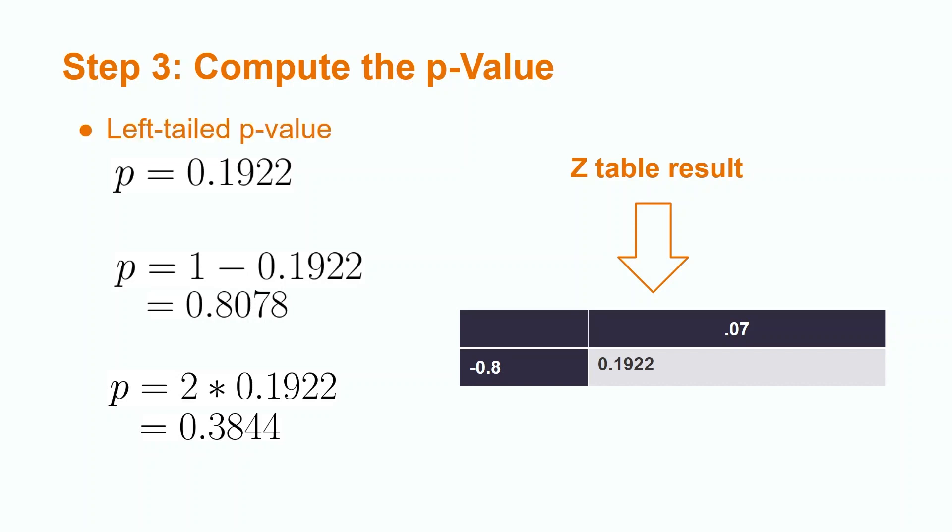If the test is right-tailed, we subtract the value we find on the table from one. This gives us a result of 0.8078. If our test is two-tailed and our test statistic is negative, we simply use the method for finding the p-value for a left-tailed test and double it. If it is not negative, we use the method for finding the p-value for a right-tailed test and then double it. This will result in a p-value of 0.3844. Please note that your p-value should always be between 0 and 1.